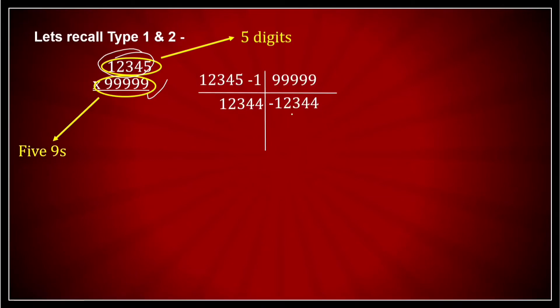And I subtracted this from here. What did I get? I got here 1, 2, 3, 4, 4 remains like this, the same here. And here I wrote 9 minus 4 was 5. 9 minus 4 is 5. 9 minus 3 is 6. 9 minus 2 is 7. And 9 minus 1 is 8.